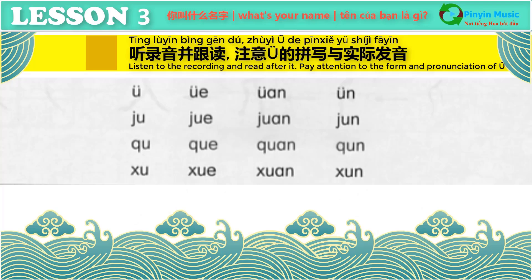听录音并跟读，注意于的拼写与实际发音。Listen to the recording and read after it. Pay attention to the form and pronunciation of 于。于，虚，靴，轩，熏。